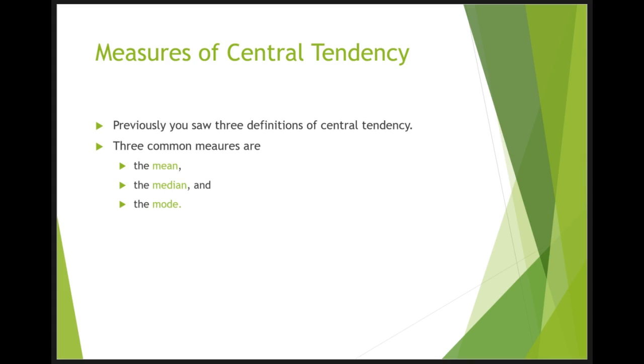Previously you learned three ways to define the center of a distribution. The point at which a distribution would balance, the value whose average absolute difference from all other values is smallest, and the value whose average squared difference from all the other values is smallest.